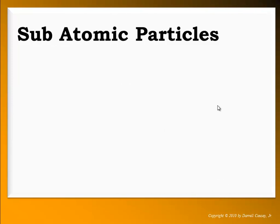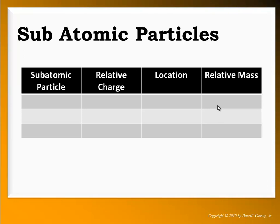The electron was the first subatomic particle found. It has a relative charge of negative one, its location is in the atomic space, and its relative mass is zero AMUs — though it does have a mass, it's so small that in laboratory work and chemical equations we treat it as zero. The proton was next to be discovered, has a positive charge, is located in the nucleus, and has a relative mass of one AMU.